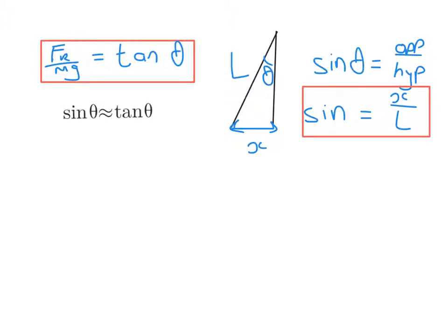Now what I'm going to use is a little trick of trigonometry here, which is that sine of an angle is approximately equal to tan of an angle if the angle is small, say below about 5 degrees. So this means that everything I'm going to do from now on only works for a pendulum with a small displacement.